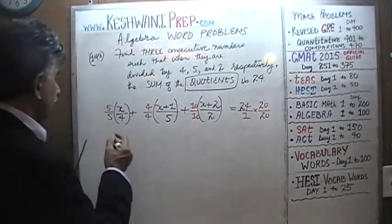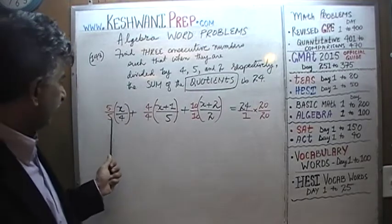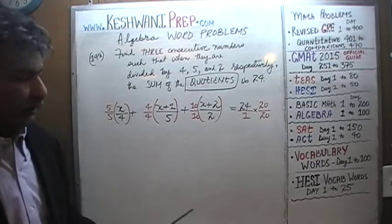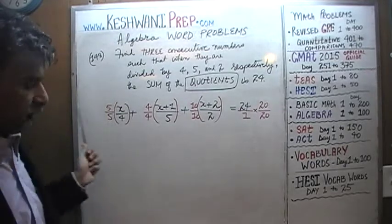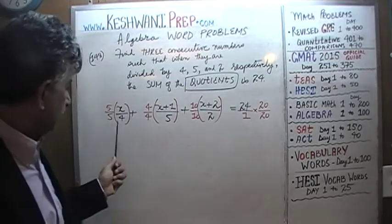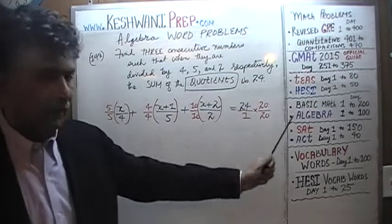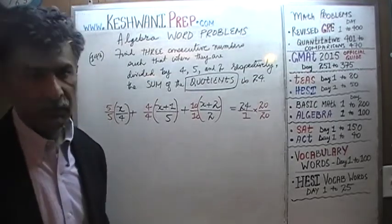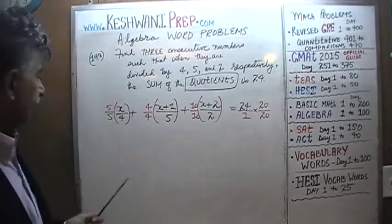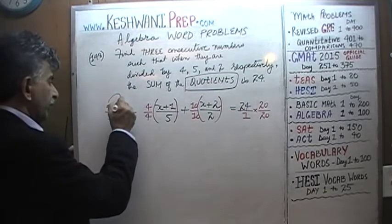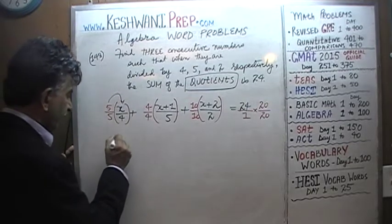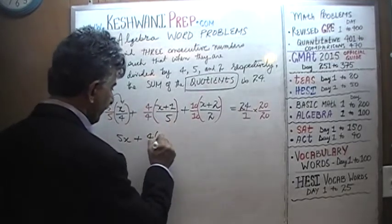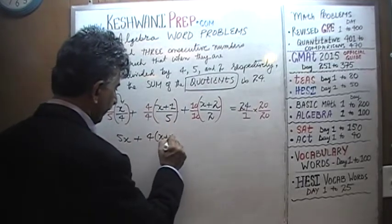Now they all have the same denominator: 5 times 4, 4 times 5, 10 times 2, and 1 times 20 — all equal 20. If we multiply the entire equation by 20, the denominator disappears from each term. What we concentrate on now is the numerator: 5 times x gives 5x, plus 4 times (x plus 1).